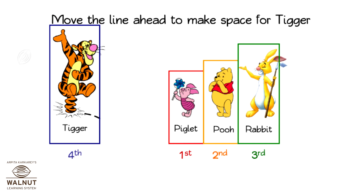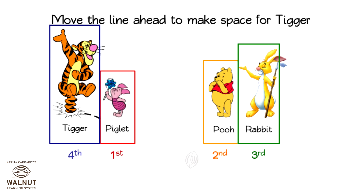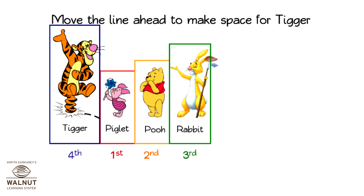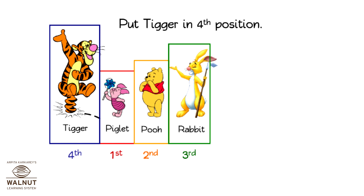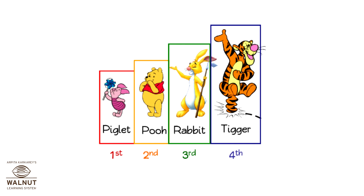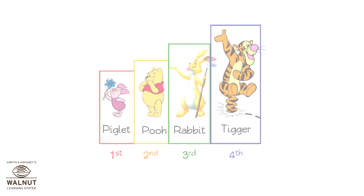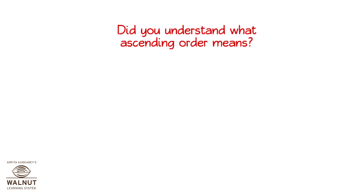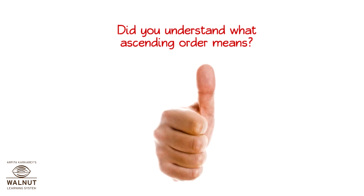Move the line ahead to make space for Tigger. Put Tigger in fourth position. Now the animals are in ascending order. They are standing height-wise, from smallest to biggest. Do you understand what ascending order means? Yes? Very good.